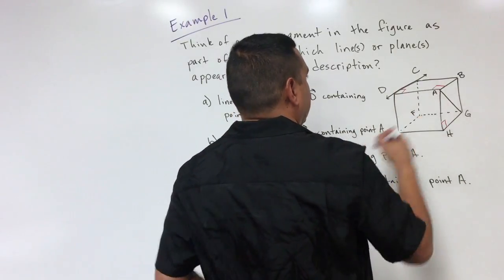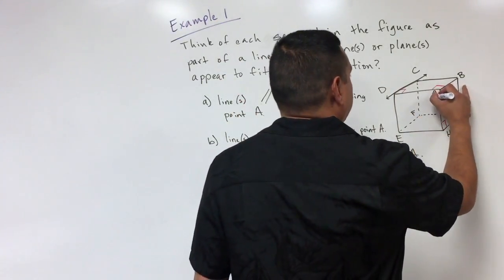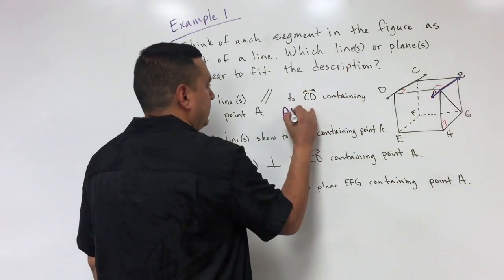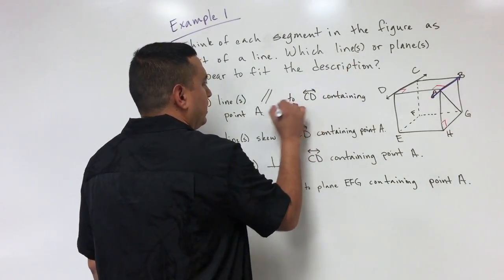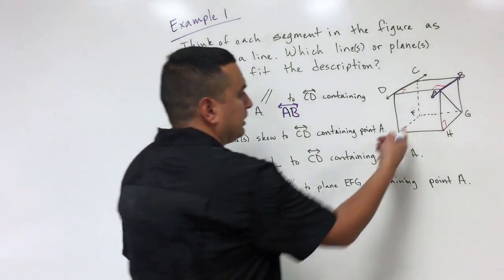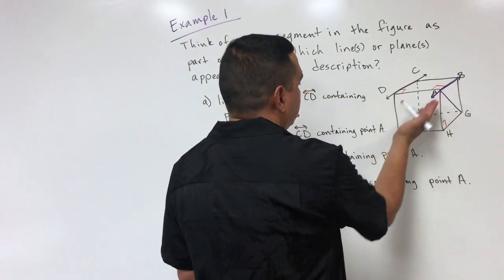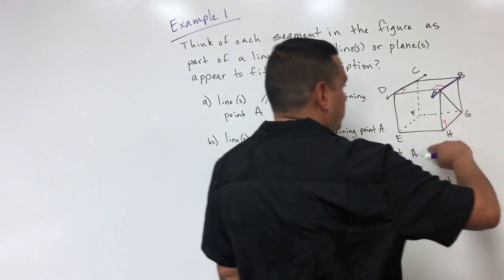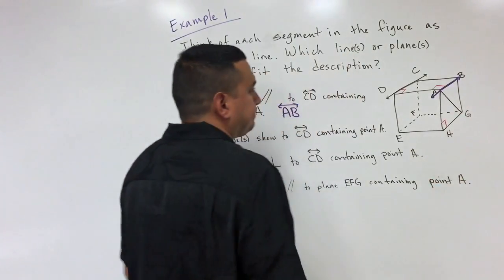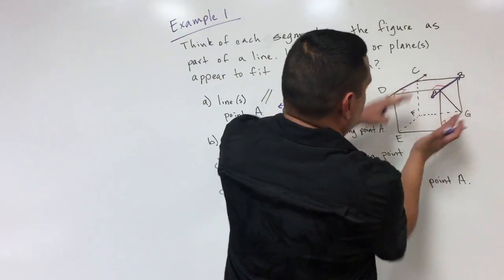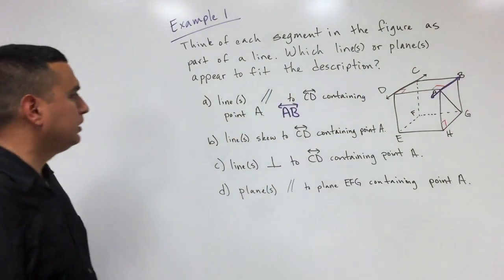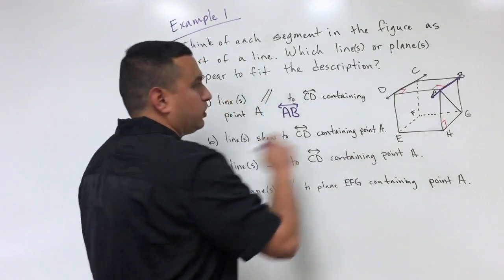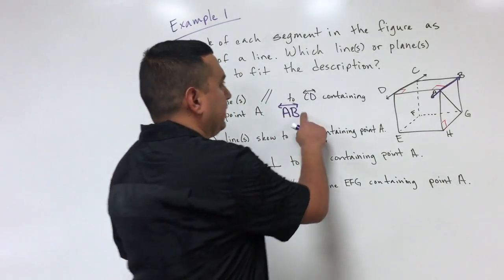For part a — parallel containing point A — line CD is going this direction, so the line that contains A going in the same direction would be line AB. There are other lines also parallel, like line EF, but it doesn't contain point A. Another example would be line GH, which is also parallel since they're going in the same direction.